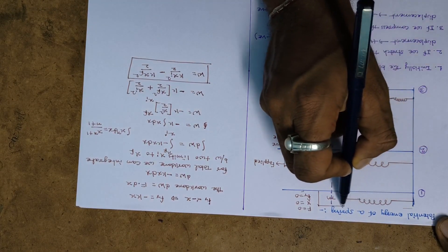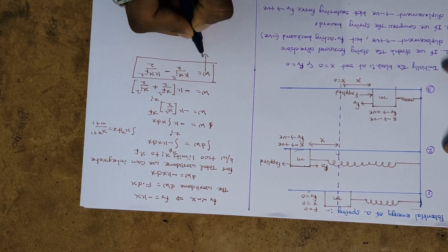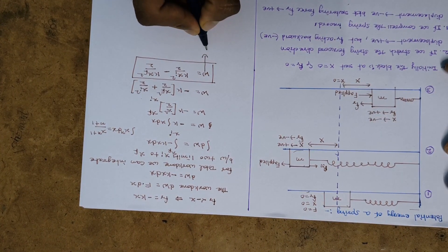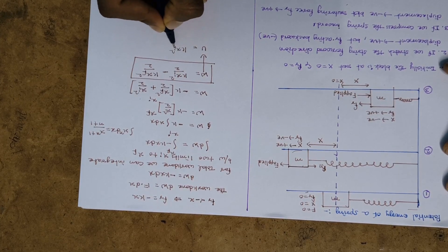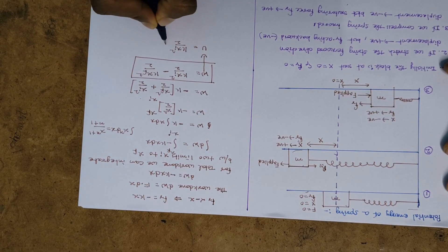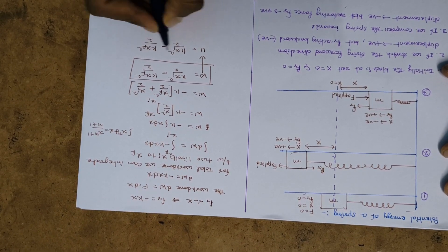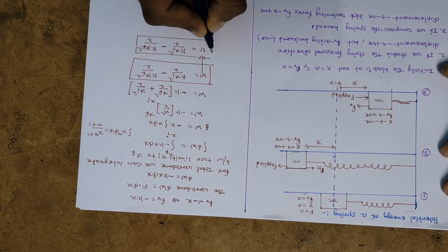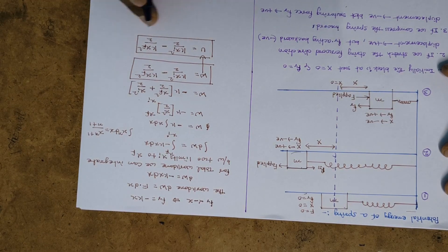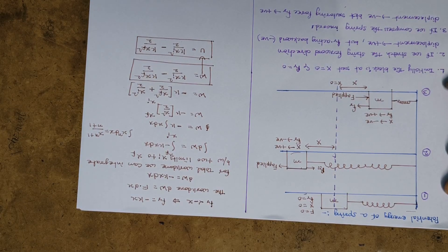Since our concept is potential energy of a spring, this work done is expressed as potential energy: U equals k x_i squared over 2 minus k x_f squared over 2. This is the derivation of the potential energy of a spring. Thank you.